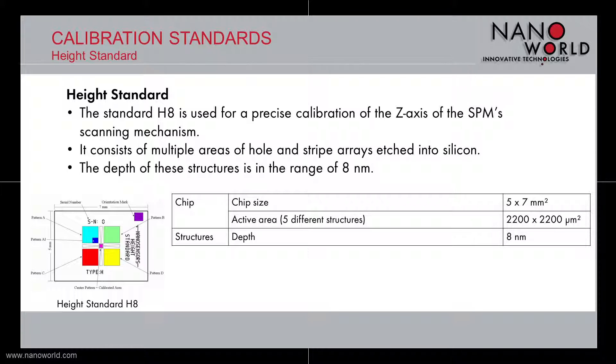It consists of multiple areas of hole and stripe arrays etched into silicon. There are a total of five different patterns as you can see on the sketch on the left. The depth of the structures is in a range of 8 nm.